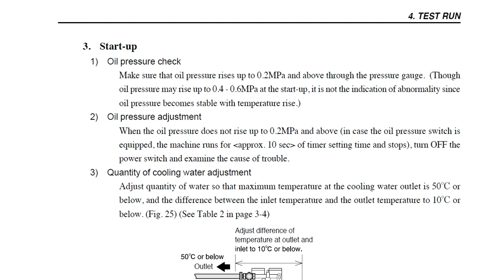The next step: we check that the oil pressure adjustment is proper. When the oil pressure does not rise up to 0.2 megapascals and above, in case the oil pressure switch is equipped, the machine runs for approximately 10 seconds timer set time and stops. Turn off the power switch and examine the cause of trouble. If the pressure does not rise, there is a protection for the air compressor and we need to find the cause.